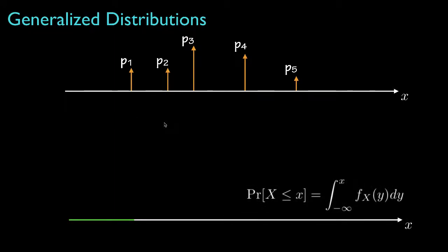Now if we evaluate the cumulative distribution for the random variable that has this generalized probability density, we'd get zero until we get to the point that includes the first delta function. Then we'd jump up by the probability P1, and we'd stay there until we get to the second delta function, and then we'd jump up by an amount equal to P2.